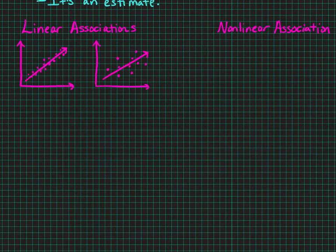Now, here are two different linear associations. They are both positive, but notice that one of them has points that are very close to the trend line, and the next one has points that are very spread out from the trend line.